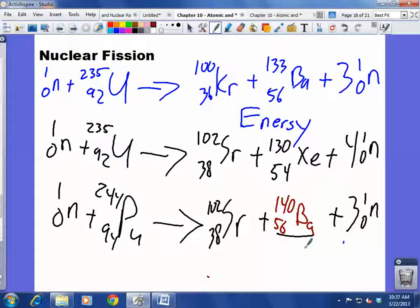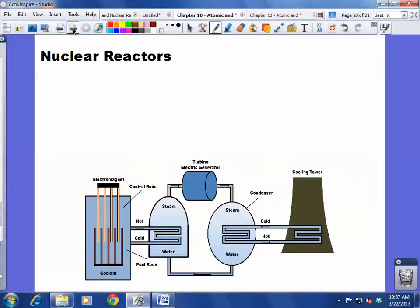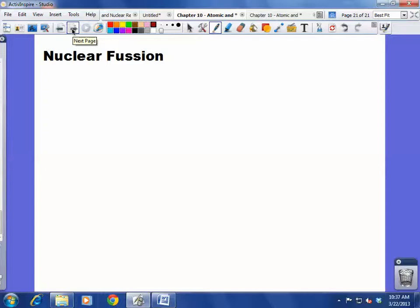So this is what we call fission. So fission is when we have one thing splitting. What's happening on the sun is a little bit different. What's happening on the sun is fusion. That's definitely not how you spell fusion.